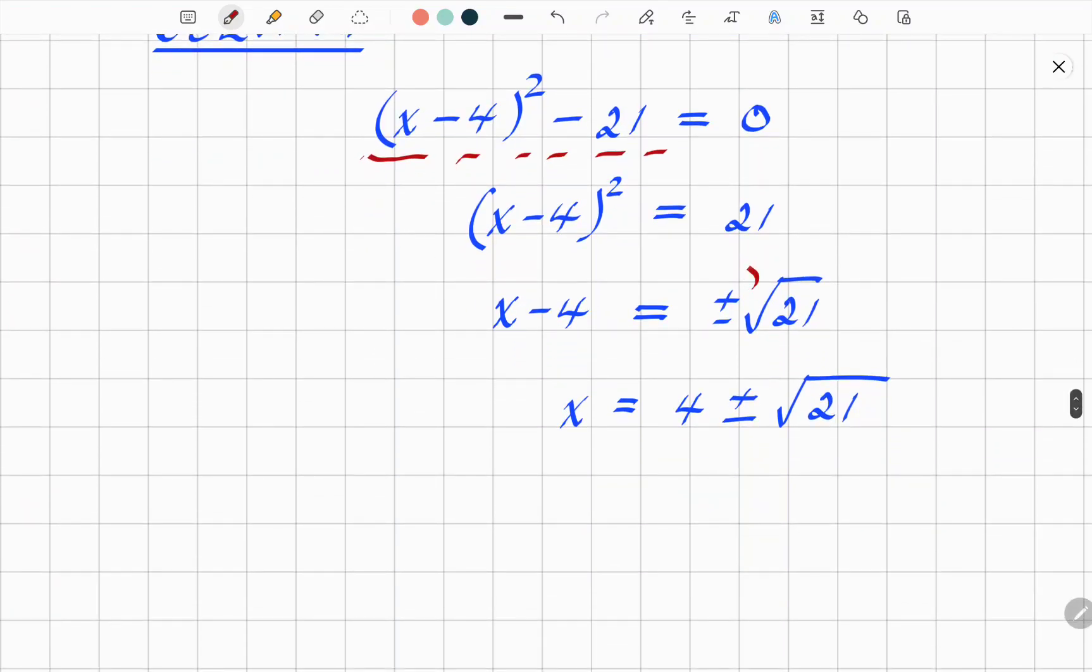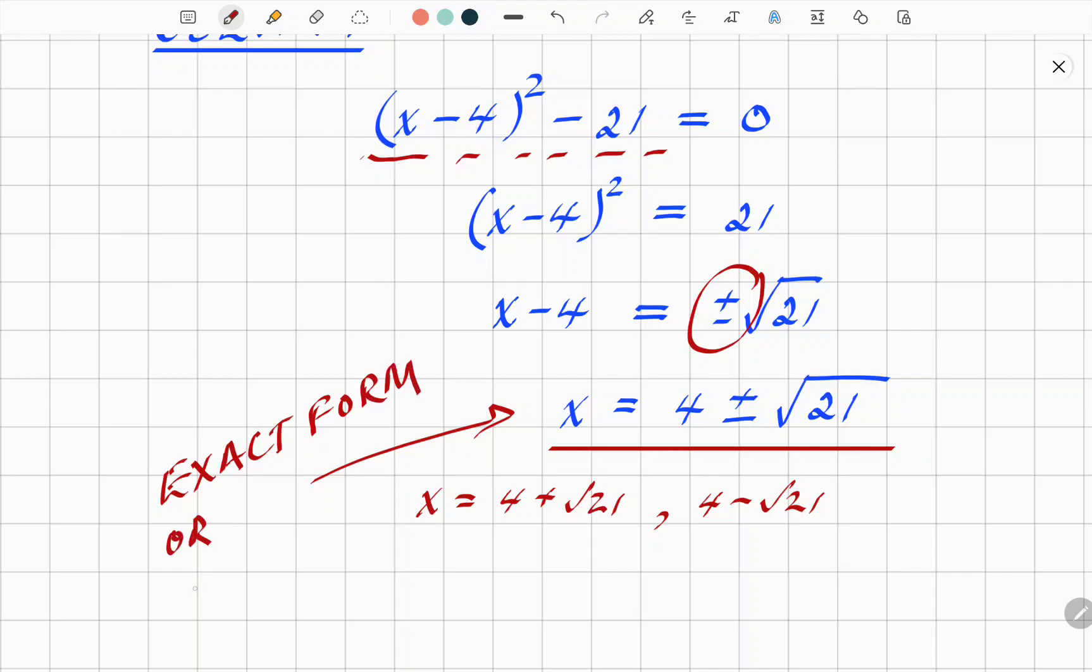Square root both sides. And here, very important, you must have the plus minus. Consider both roots. So x - 4 equals ±√21. And final form, x equals 4 ± √21 are the two roots. So therefore, you've got two solutions, 4 + √21 and 4 - √21. These are called the exact form or the surd form.